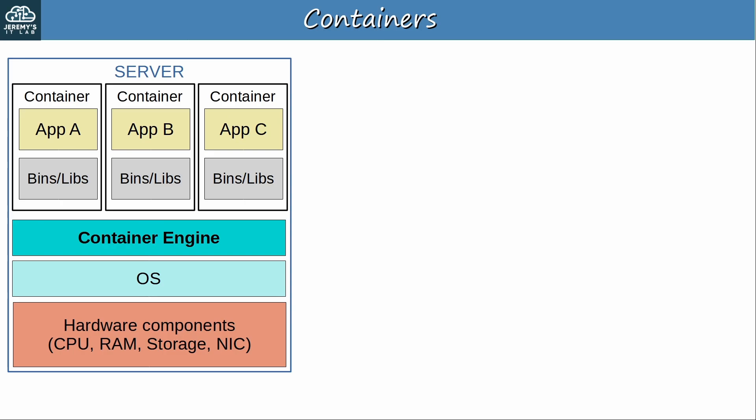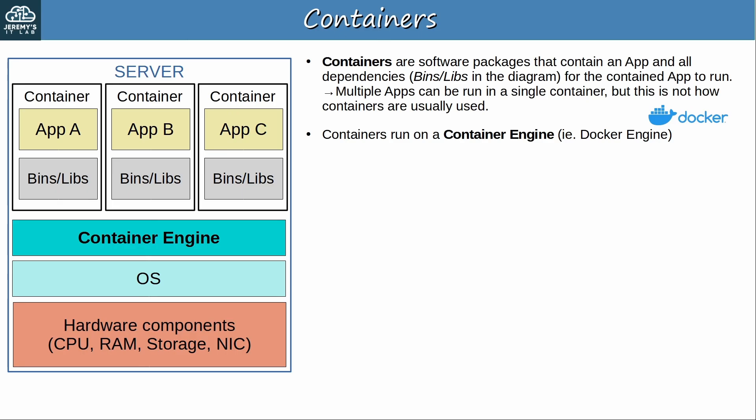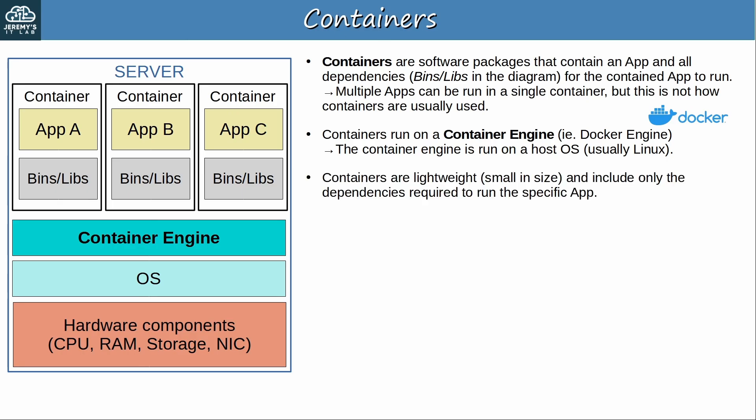This diagram shows the basic architecture of how containers run. Containers are software packages that contain an app and all dependencies — the binaries and libraries — for the contained app to run. Note that multiple apps can be run in a single container, although this is not how containers are usually used. You can generally assume that one container means one app. Containers run on a container engine — for example Docker engine, the most popular one — and that container engine is run on a host OS, usually Linux, which runs on the hardware. Containers are lightweight and include only the dependencies required for the specific app. No need to run an OS in each container, unlike in VMs. That is the major difference between VMs and containers: VMs run an OS in each VM, whereas containers don't. All of the different costs and benefits of VMs vs containers come from that major difference.